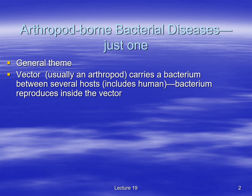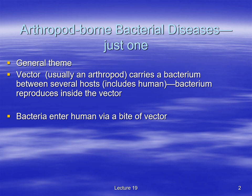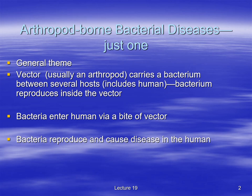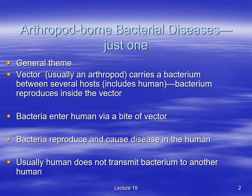The bacteria enter the human via the bite of the vector — that's true of all these diseases. The bacteria then reproduce and cause disease in the human. Usually there's no human-to-human transmission. The biological vector will bite a human who's a reservoir, take the bacteria from that reservoir, and transfer it to another host — human, bird, horse, or whatever.